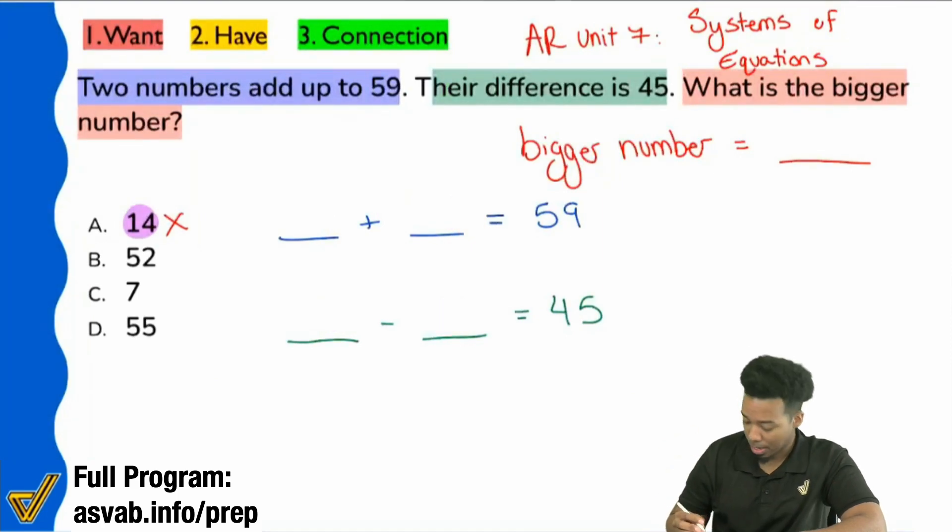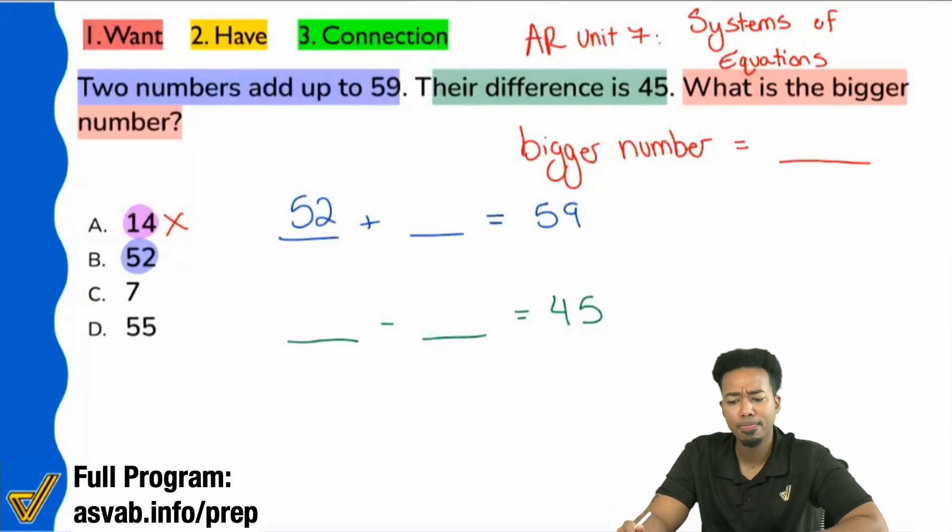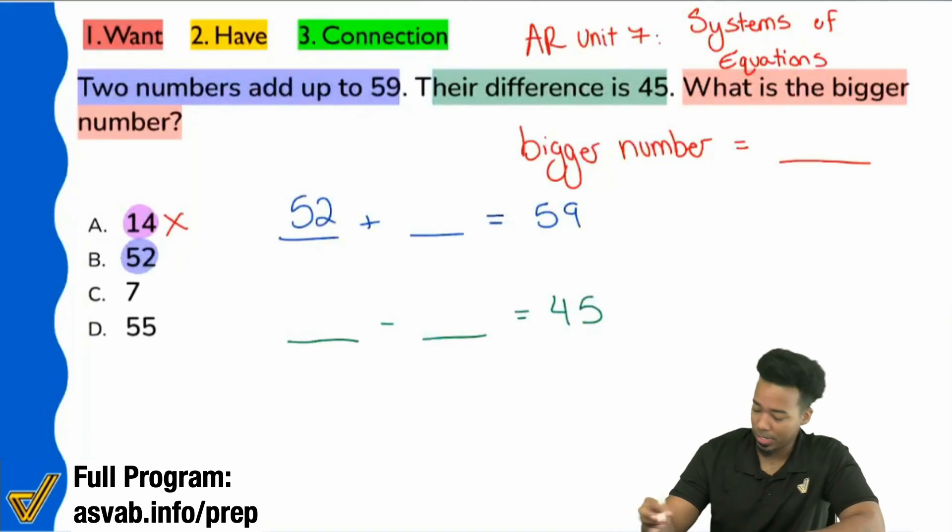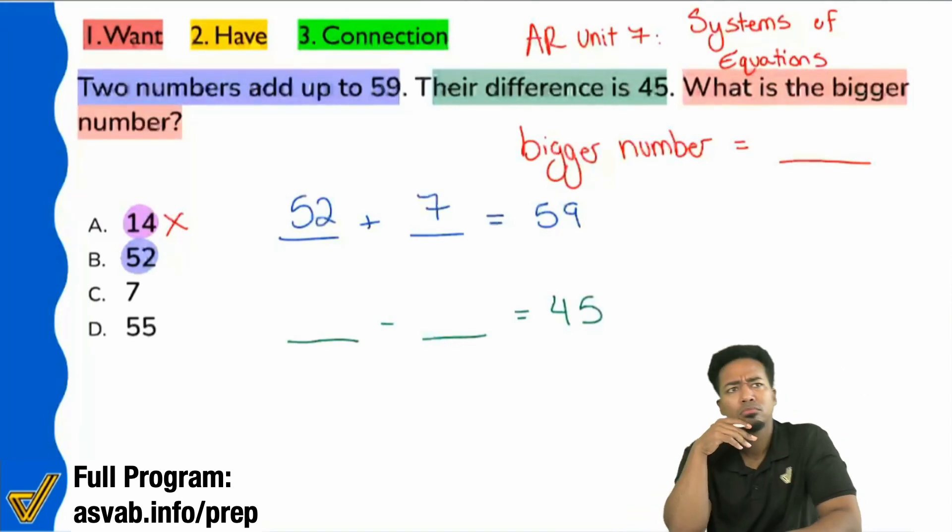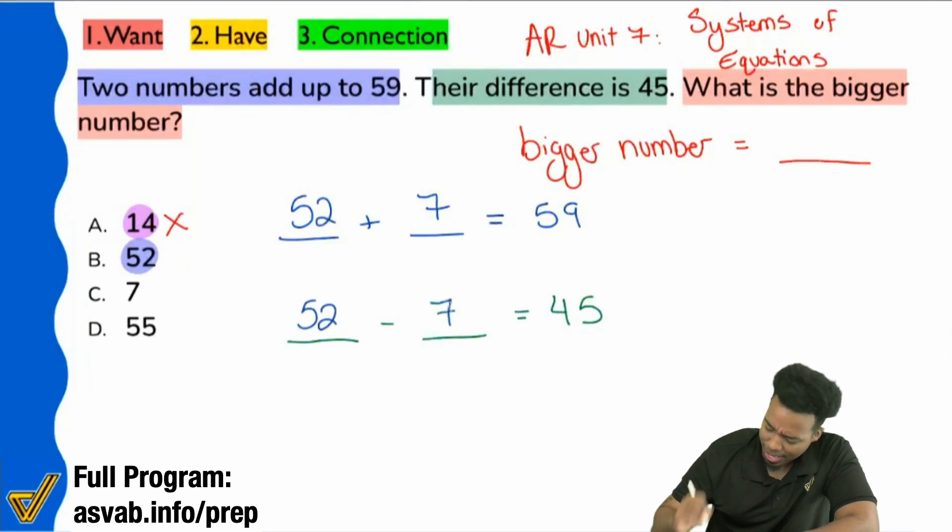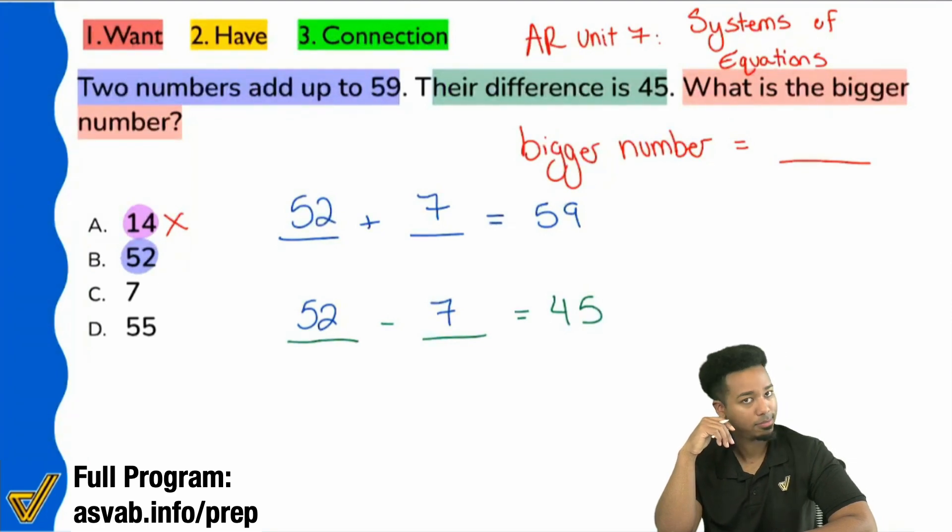We can move forward and try out the next number. Let's try 52. Everybody, if we try 52, let's go ahead and highlight that in blue there. Okay, everybody, what number plus 52 gives us 59? That'll be seven. That's right. Okay. Let's use those same two numbers. Everybody, is 52 minus seven equal to 45? It fits the bill. So 52 plus seven does give us 59. 52 minus seven does give us 45.